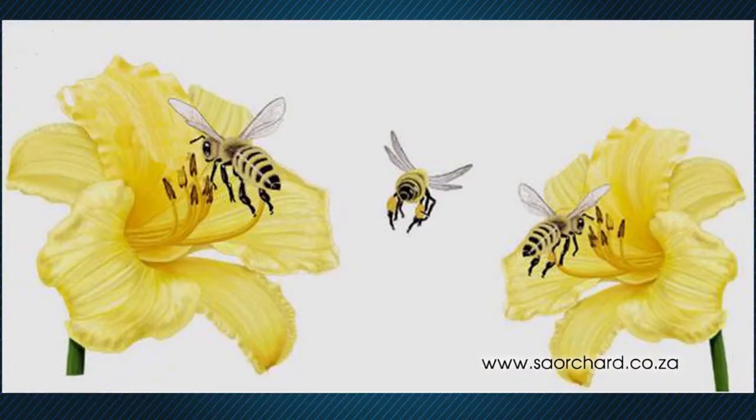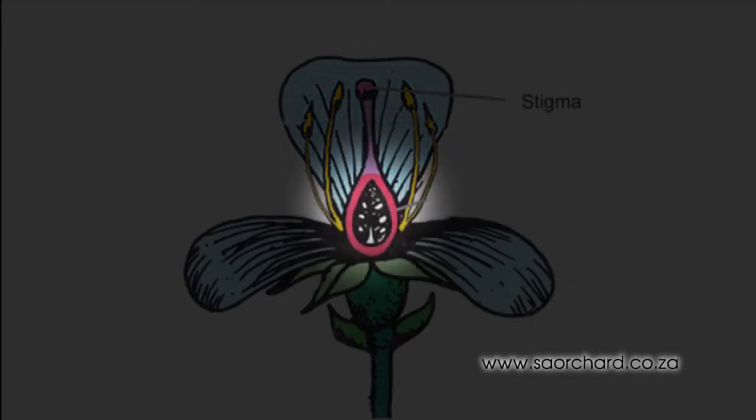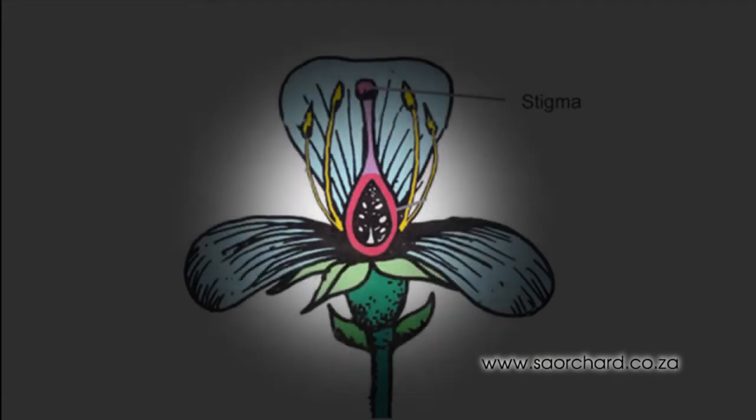In order for fruit to form on most fruit trees, pollen from one flower needs to be taken to another flower which it will fertilize. The transfer of pollen grains from the anther of a flower to the stigma of another flower is critical. After reaching the stigma, the pollen grain will grow down the style into the embryo sack where fertilization takes place.